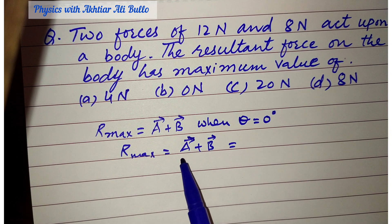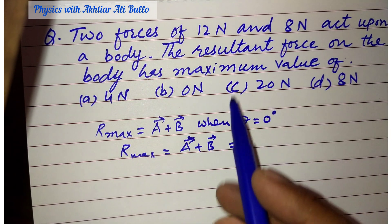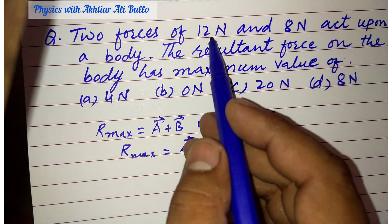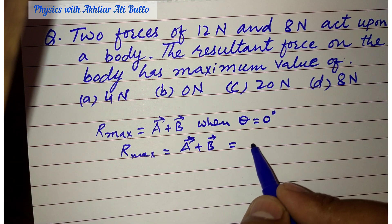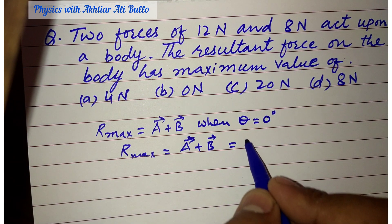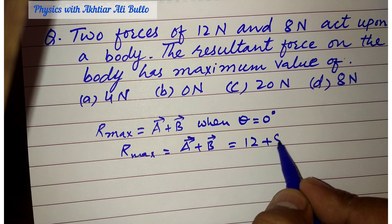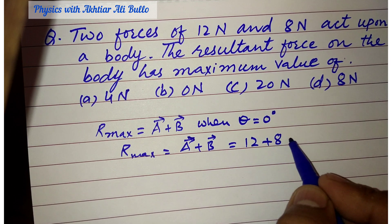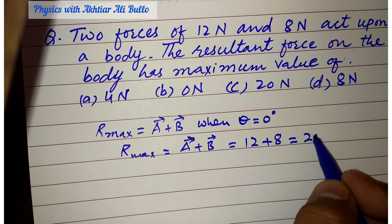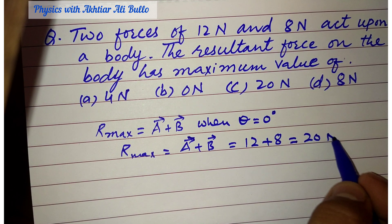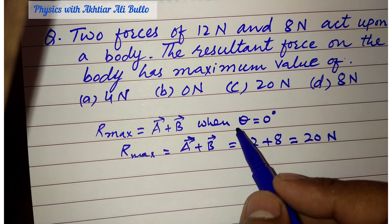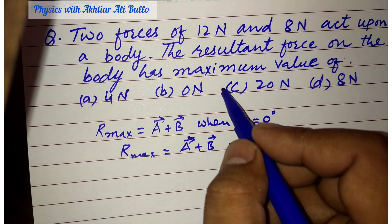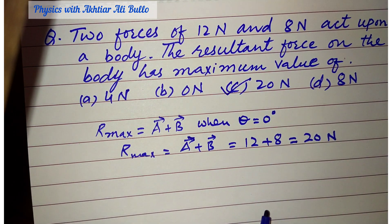The magnitude of force A is 12 Newton and the magnitude of force B is 8 Newton. So 12 plus 8 is equal to 20 Newton. Therefore, the correct option is C) 20 Newton.